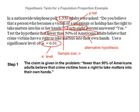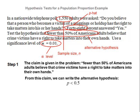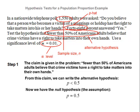For step one, the claim given in the problem is that fewer than 50% of American adults believe that crime victims have a right to take matters into their own hands. From this claim, we can say p is less than 0.5, less than 50%. The assumed value of the population proportion is 50%, or 0.5. Step two, our alpha level is 0.01.